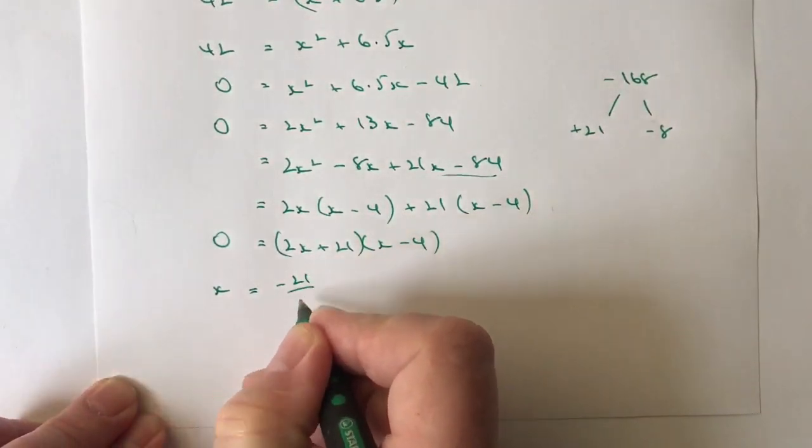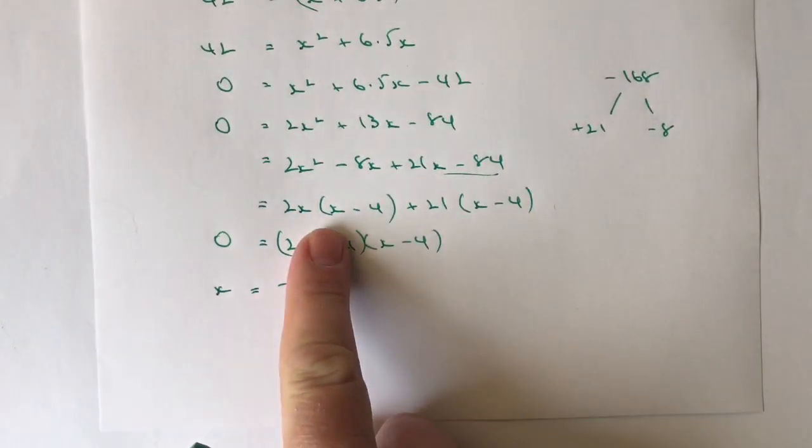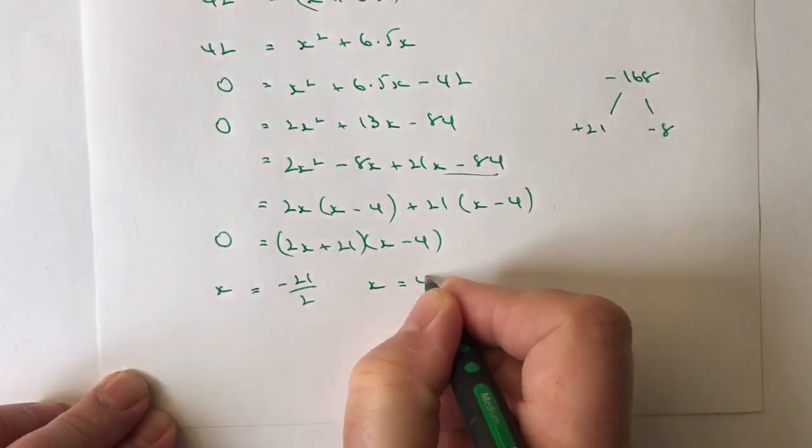If I look at the second, I've got x minus 4 equals 0. So therefore, x equals 4.